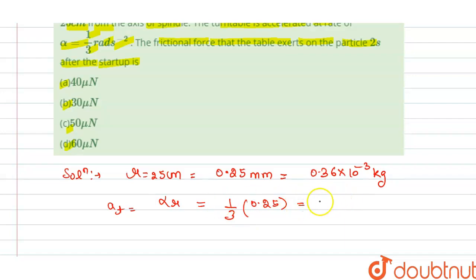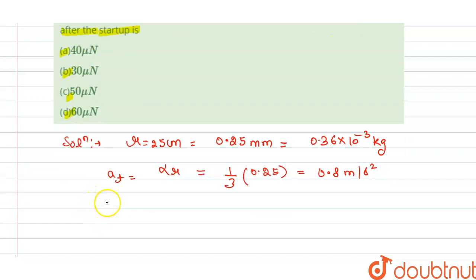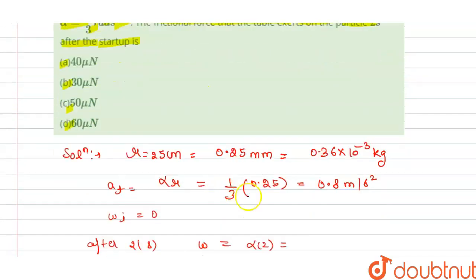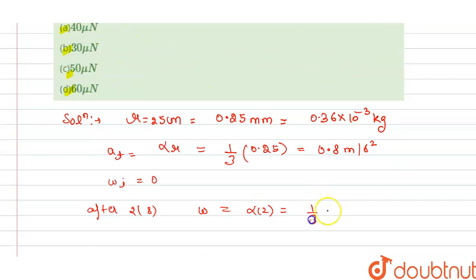We have initial angular velocity is 0. And after 2 seconds, our angular velocity w is alpha into 2. So alpha is 1 by 3 into 2, which equals 0.66 radian per second.